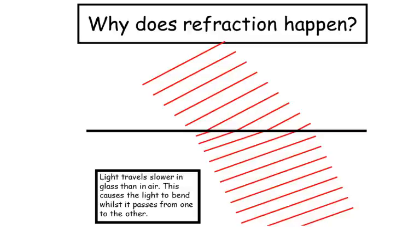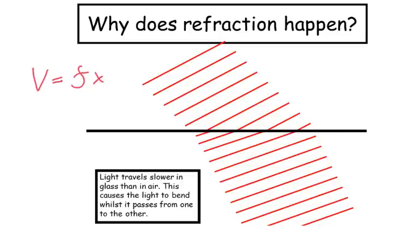So why does refraction happen? The red lines represent the wavefront of the light as it's coming in — these are the peaks of the waves. As the light moves from one material to another, if it's forced to slow down, the wavelengths themselves become smaller and the light bends towards the normal. If you think about the equation v equals f times lambda, if the wave speed is reduced the wavelength is also reduced, as long as the frequency remains the same.